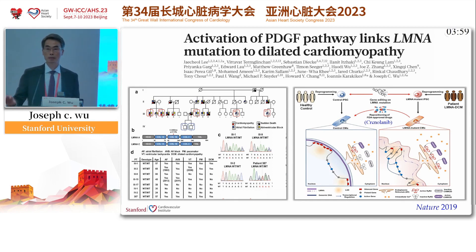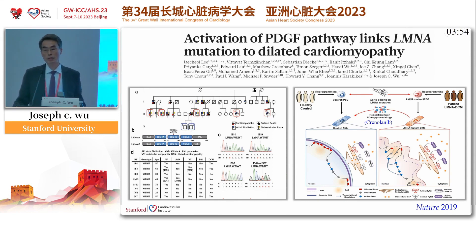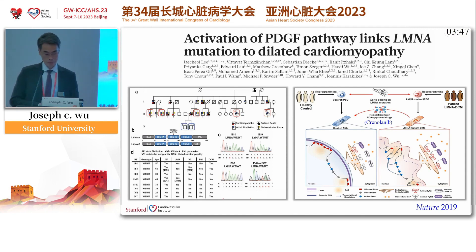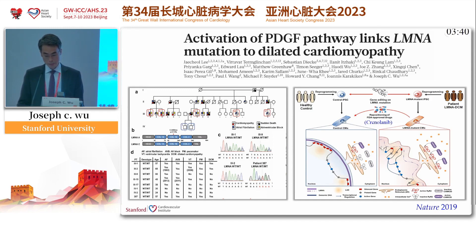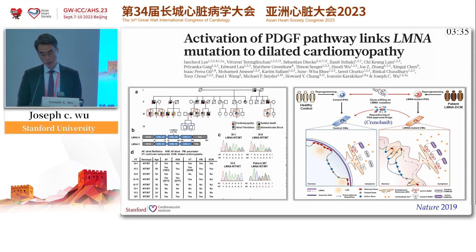So if you're missing this lamin, the nuclear structure gets disrupted and the cells are much more fragile. It caused cardiomyopathy as well as atrial fibrillation and sudden cardiac death in many of these patients. And on the cartoon on the right, you'll see the mechanism of how lamin causes dilated cardiomyopathy.